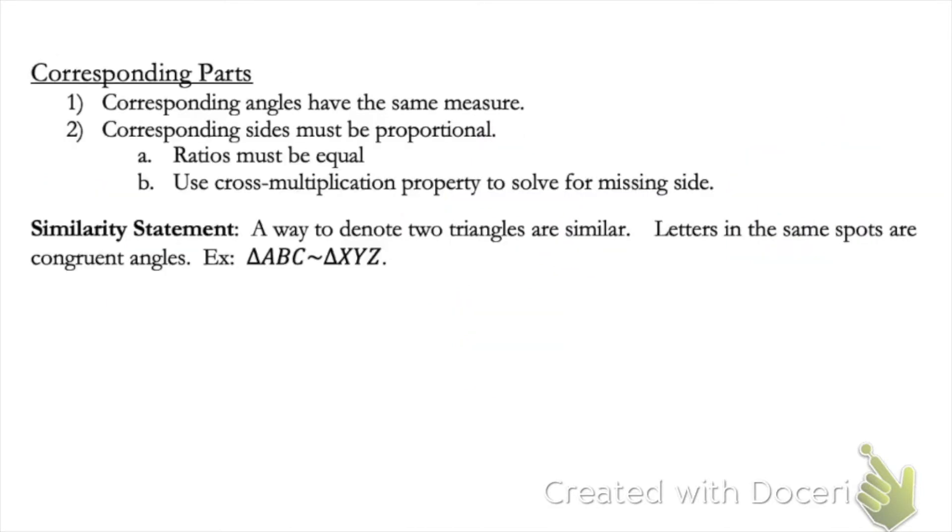Corresponding parts. Whenever we have two similar triangles, the angle measures are always the same. So both triangles will have the exact same angle measures. The sides though are just proportional. So this means the ratios are the same. So ratios are equal and here we're going to be setting up a lot of proportions to solve for a missing side.